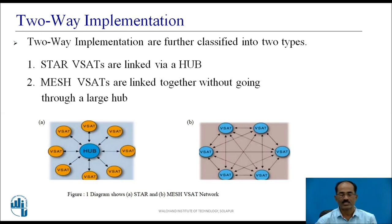Two-way implementations are further classified into two types. The first is star: VSATs are linked via a hub. The second is mesh: VSATs are linked together without going through a large hub. In the star VSAT network, there is a central hub — the master control station — and if one VSAT wants to communicate with another, the signal first reaches the hub and then the other VSAT. In the mesh architecture there is no hub; communication takes place directly from one VSAT to another.